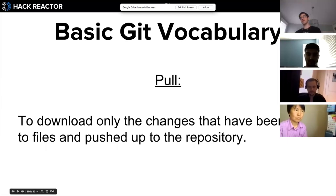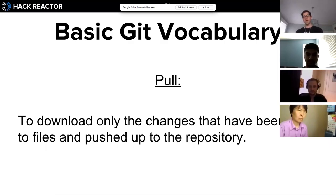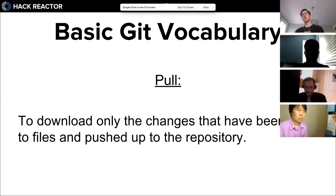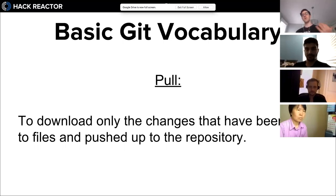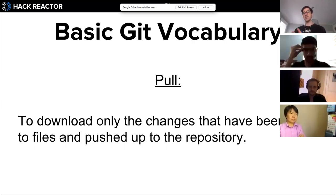'Pull' is the command you use to download only the changes that have been made to files and pushed up to the repository. If you're working on a team of four, you all clone down the same code. Someone might make commits and push them up - you want to pull down those changes regularly to avoid conflicts where your code has changes that conflict with a teammate's. We probably won't get into too much pulling or merging or handling merge conflicts until later in the course when we're working on bigger group projects.